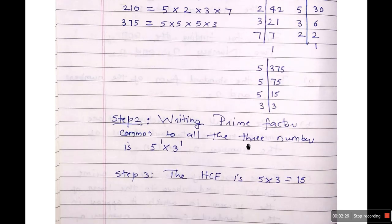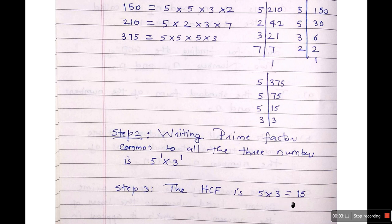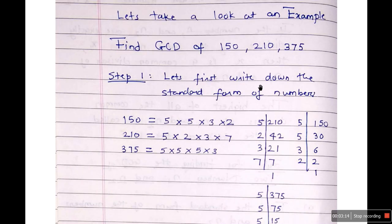Step 2: write the prime factors common to all three numbers. All of them have 5, but only two of them have 5² — 210 doesn't have 5², so 5¹ is what is common. And 3 is also common in all three. 2 is not common, and 7 is also not common in all three. So the common factors are 5¹ × 3¹. Step 3: the HCF is 5 × 3 = 15. So the HCF of these three numbers is 15.